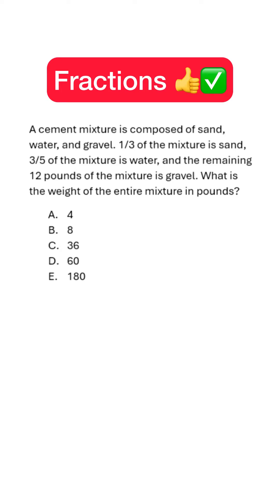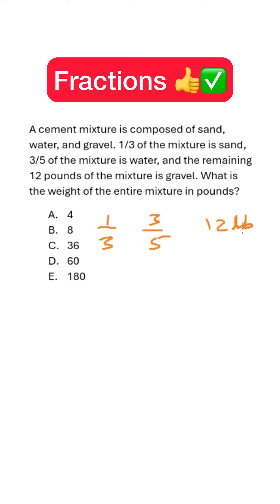A cement mixture is composed of sand, water, and gribble. One third of the mixture is sand, and three fifths of the mixture is water. The remaining twelve pounds of the mixture is gribble.